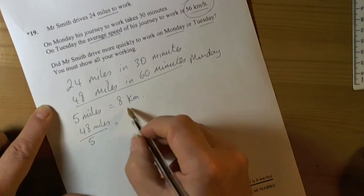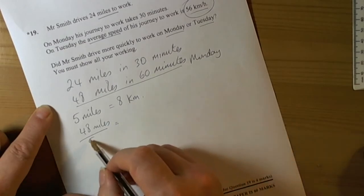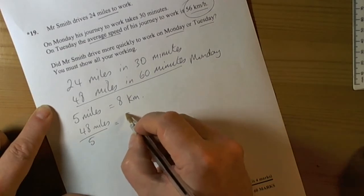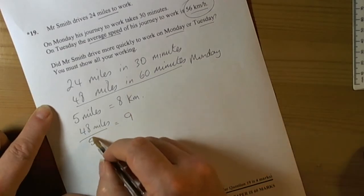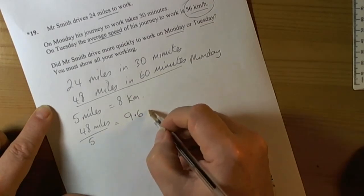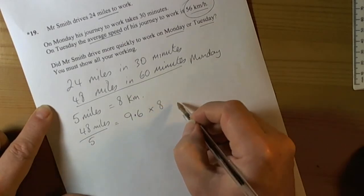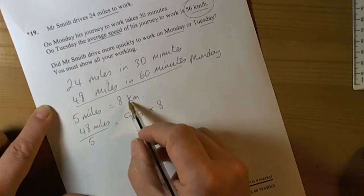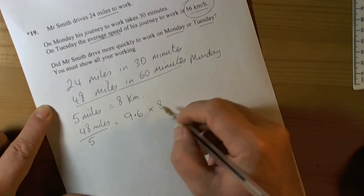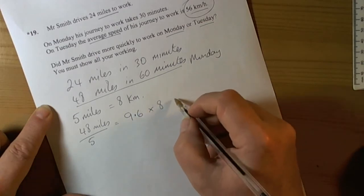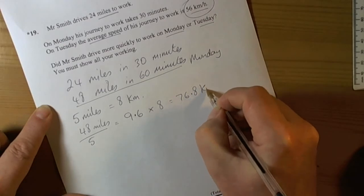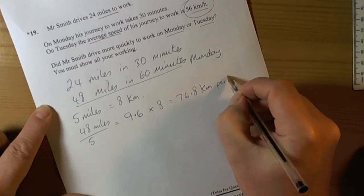Because we can multiply it by 8. 5 into 48 is 9, 3 left over, and 3 fifths is 0.6, so we're going to know that he's got 9.6. We can times that by the 8, because there's 8 kilometers for every 5 miles. So 9.6 times 8: 8 nines are 72, 8 sixes are 48, so it's going to be 76.8 kilometers per hour.